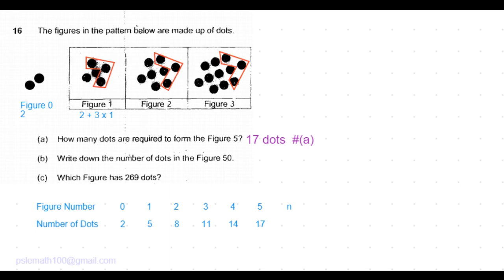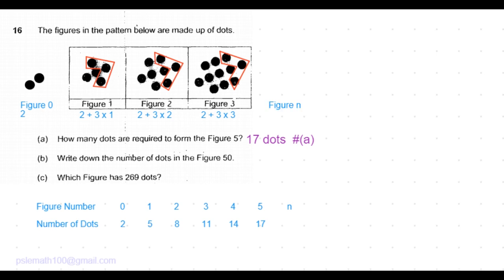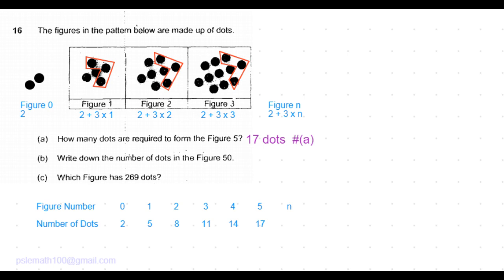So for figure 1, it is 2 plus 3 times 1. Figure 2 is 2 plus 3 times 2. Figure 3 is 2 plus 3 times 3. So similarly, figure n would be 2 plus 3 times n. This method is called constant difference method. The constant difference here is 3.